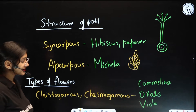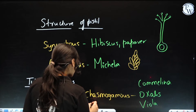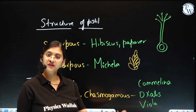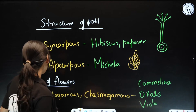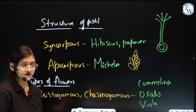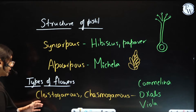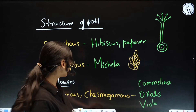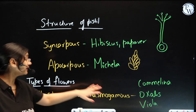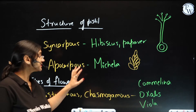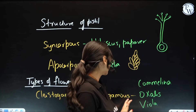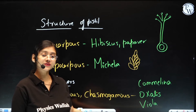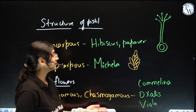Coming to types of flowers — there are basically two types: open and closed. Chasmogamous means open flower. Most of the flowers that we get to see around are open flowers, like Hibiscus and so on. Cleistogamous means closed flowers — in the grasses family we are able to see cleistogamous flowers. But there are some plants which are able to show both chasmogamous and cleistogamous flowers.